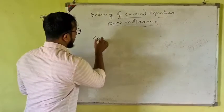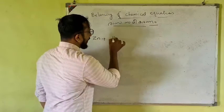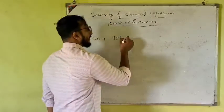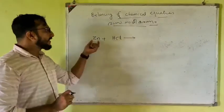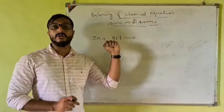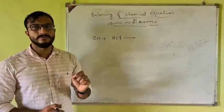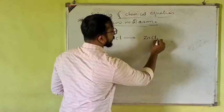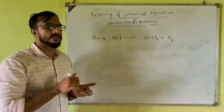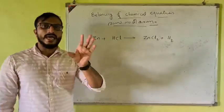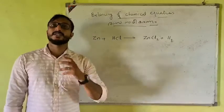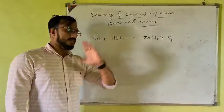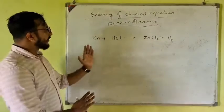Let us check another example: Zn + HCl, zinc reacting with hydrogen chloride — hydrochloric acid. Zinc is a metal. The products are ZnCl2 plus H2. When hydrogen is reactive with the dilute acid, hydrogen gas is produced. That is the equation. But this equation is not balanced.